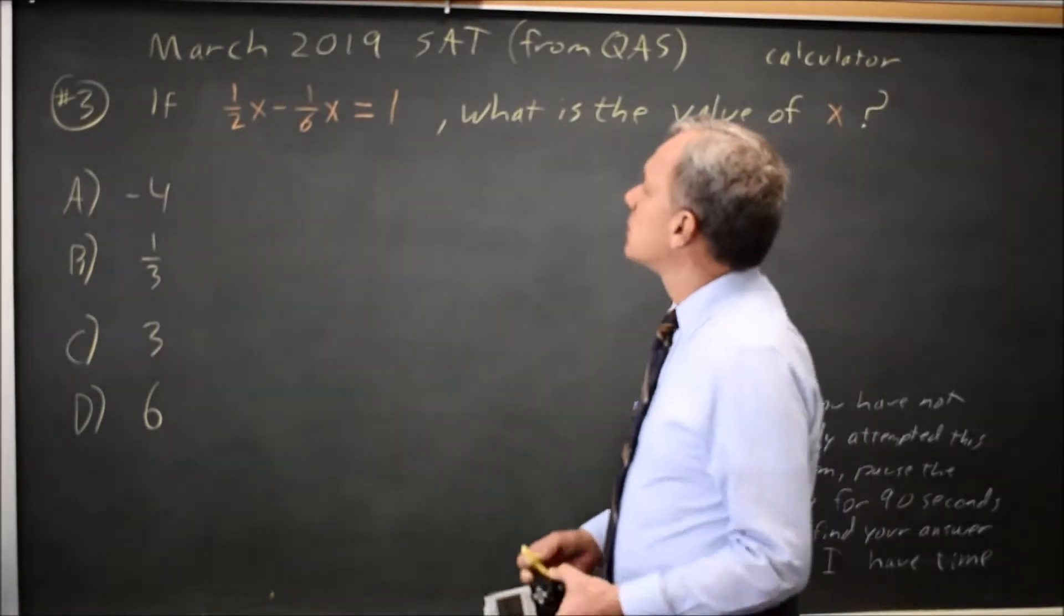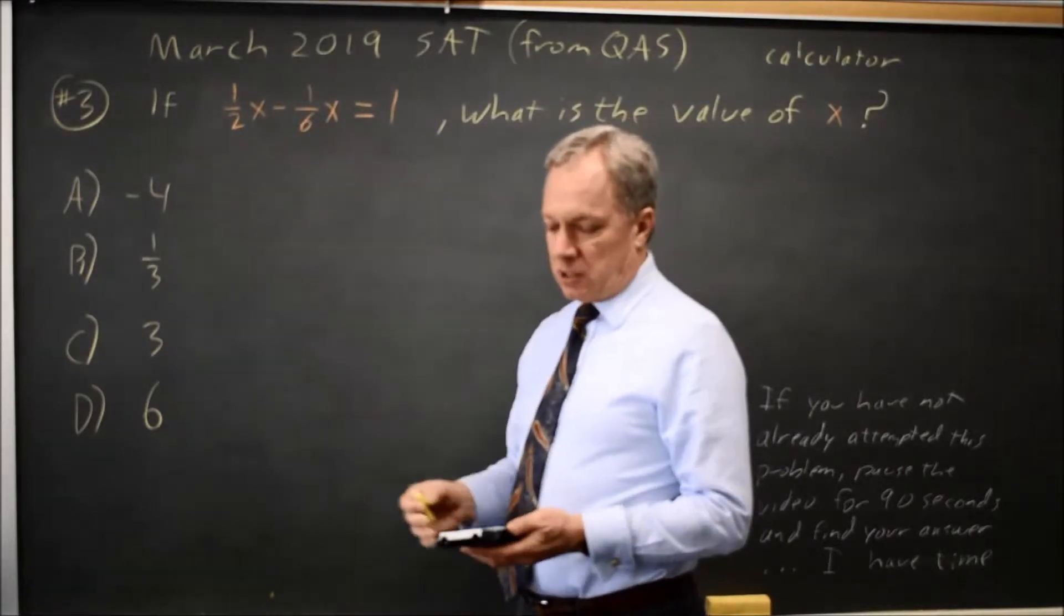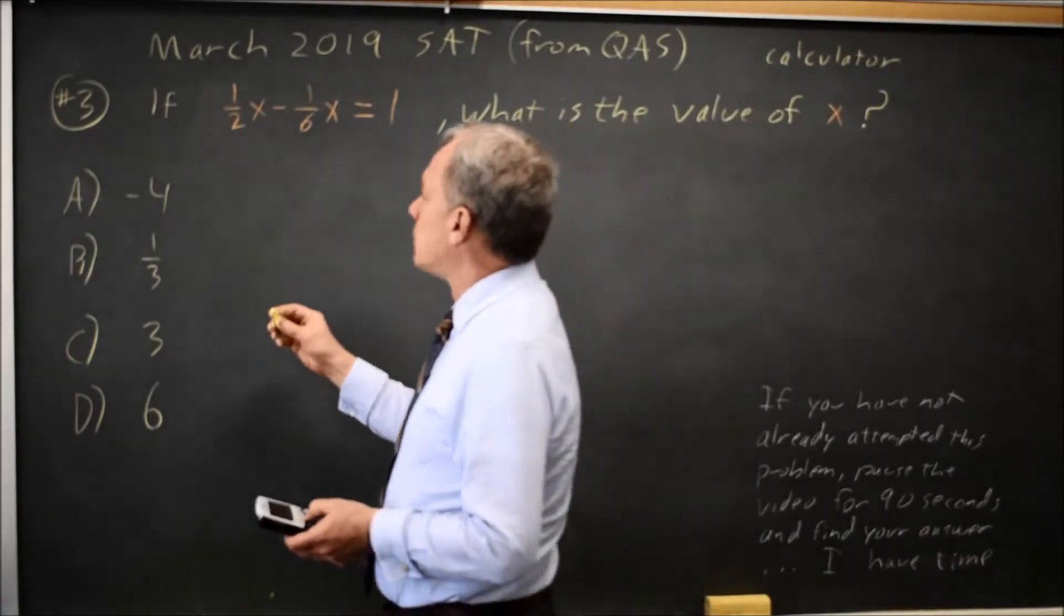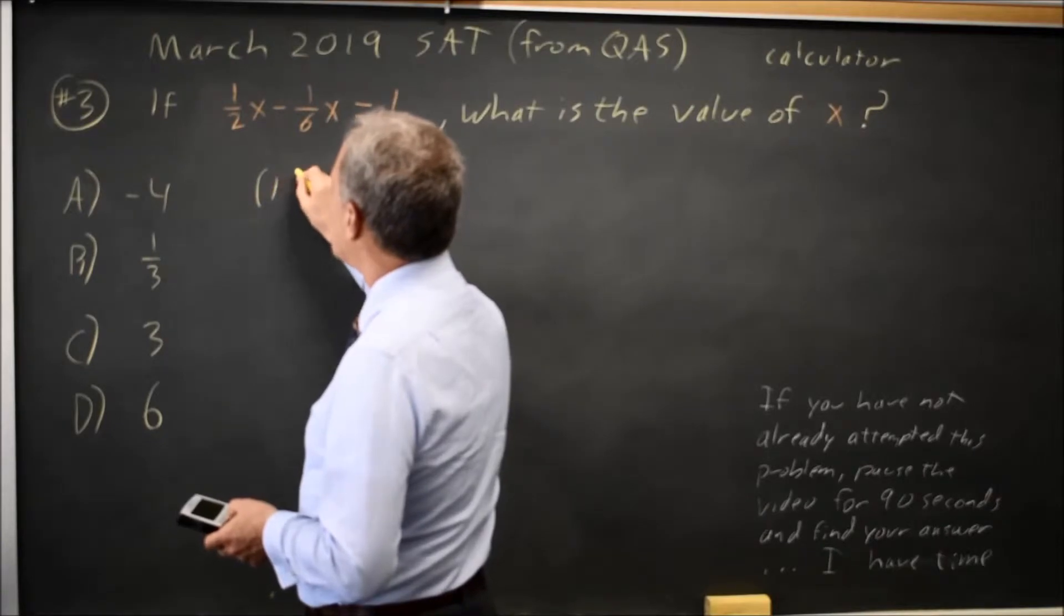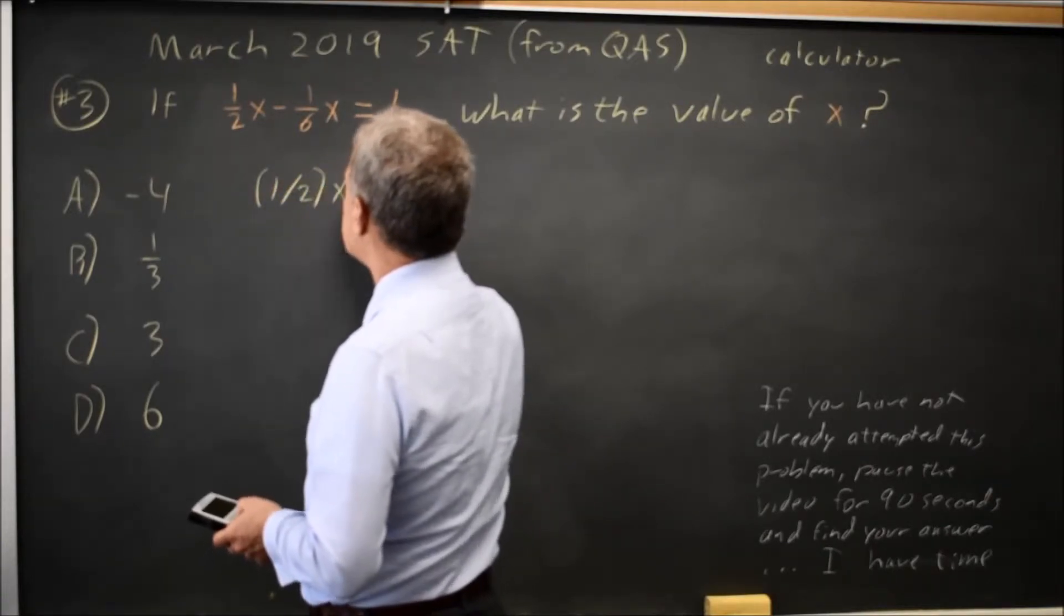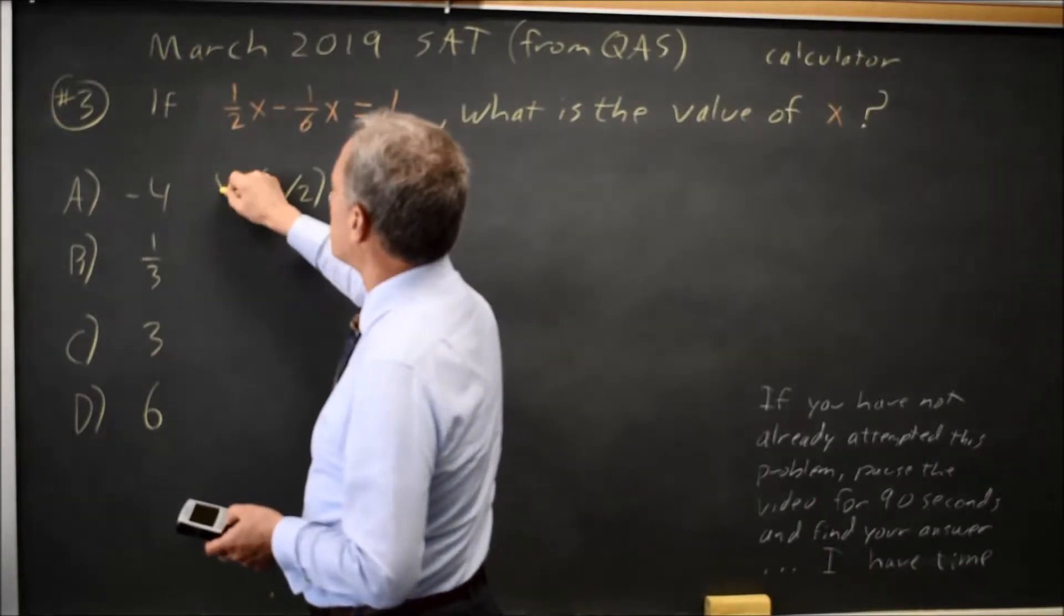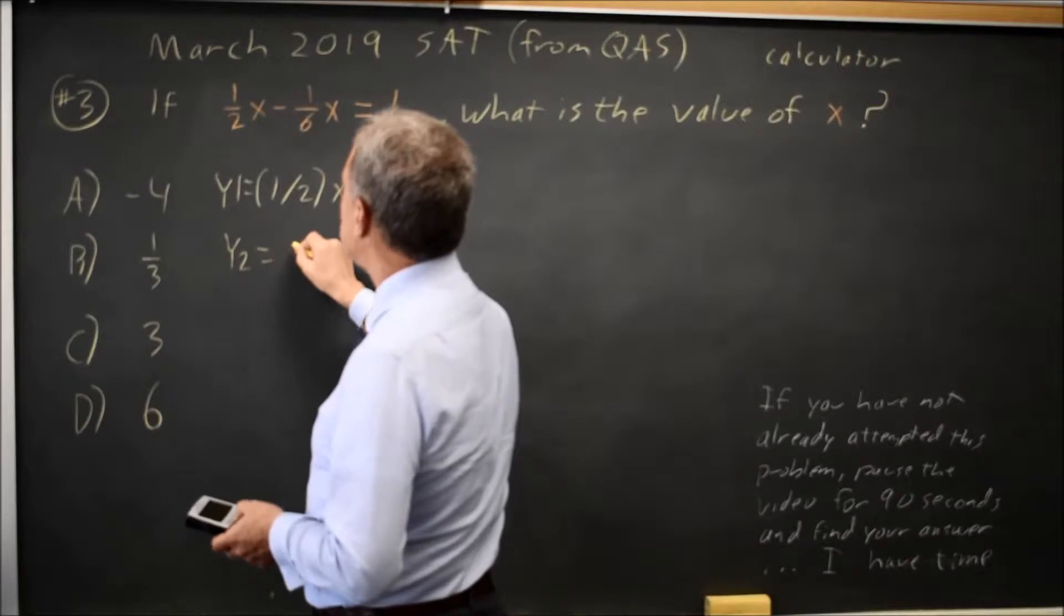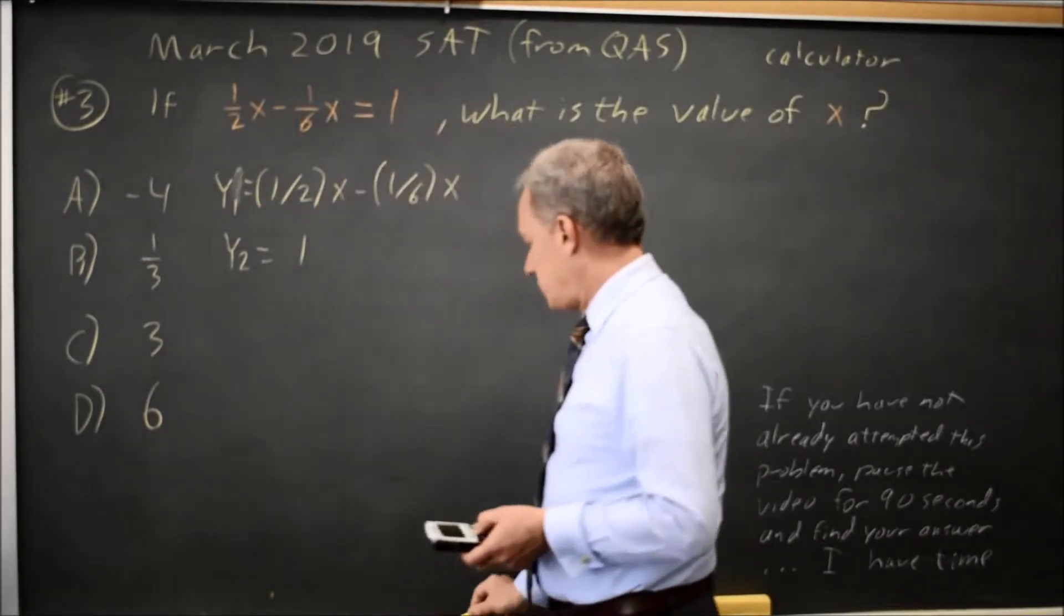So let's take a look at this. Any time I have an equation with only one variable on the calculator section, I'll go to y equals, enter the left side in y1, remember to use parentheses appropriately, 1 over 2x minus 1 over 6x. And that's my y1. y2 is 1. So I put the left side in y1, the right side in y2.